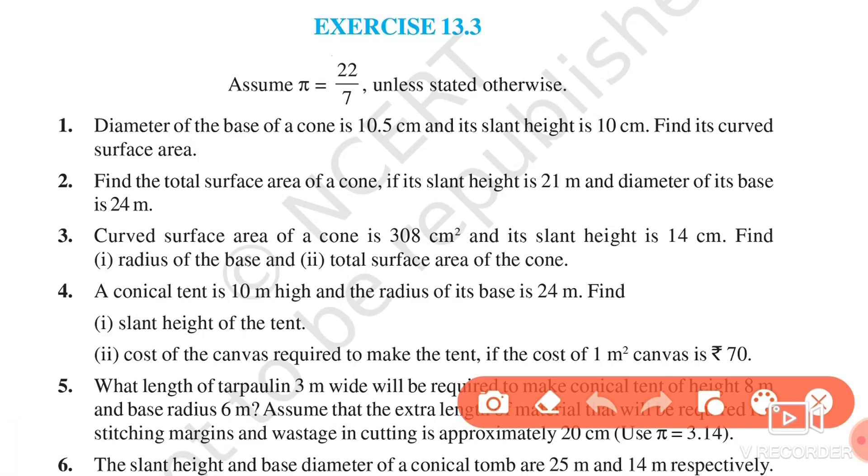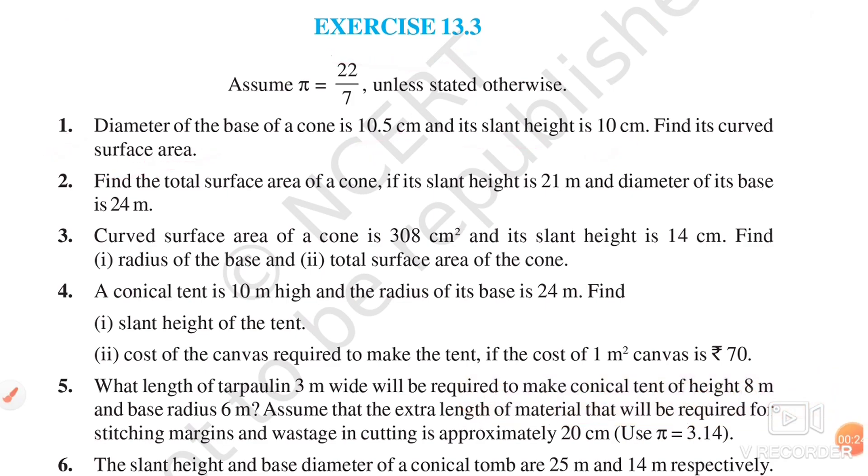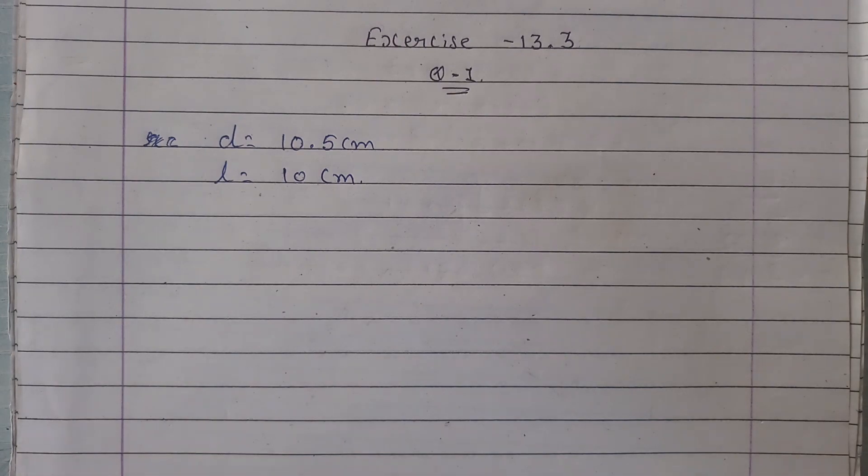Hello students, in this session we will continue with Exercise 13.3, Question 1. The diameter of the base of the cone is 10.5 centimeters and its slant height is 10 centimeters. Find its curved surface area. Ek cone hai jiska diameter 10.5 centimeter hai aur slant height 10 centimeter hai. Humme is ka curved surface area chahiye hai. Let's solve it.